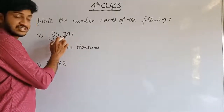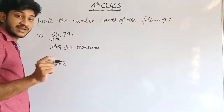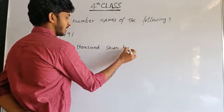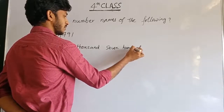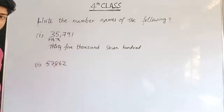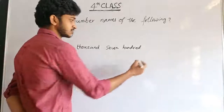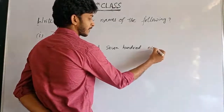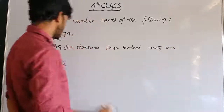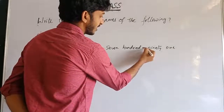See this seven — in which place is it? Ones, tens, hundreds — it is in the hundreds place. Total hundreds: seven hundreds. So seven hundred. And the nine is in the tens place, so the value of nine is ninety. And finally one. So 35,791 is thirty-five thousand, seven hundred and ninety-one.